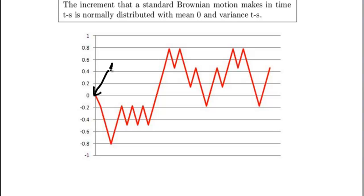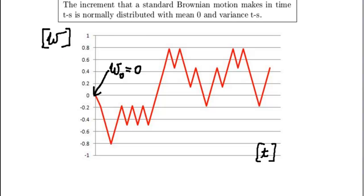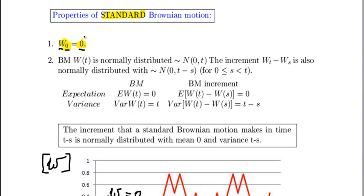So W at time 0 equals 0. On the x-axis we've got time, and on the y-axis we've got W, which is the values of our Brownian motion. Now clearly this property was pretty much self-explanatory.